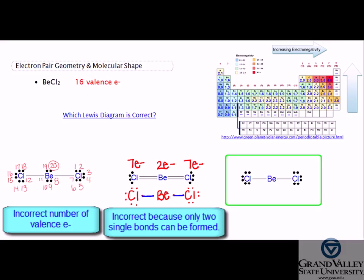Seeing that the final option has the correct number of valence electrons and only two single bonds, this must be the correct diagram. A common error when drawing the structure for BeCl₂ is adding extra electrons to beryllium to fulfill the octet rule of eight valence electrons. Likewise, another error is forming double bonds between the atoms.